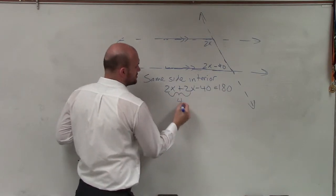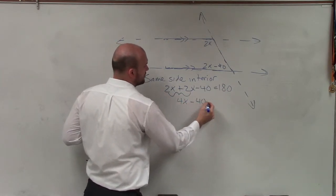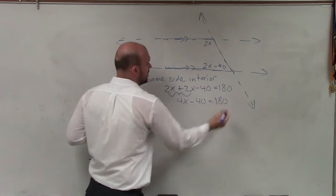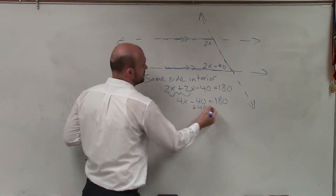Now I can combine my like terms. So I get 4x minus 40 equals 180. Add 40 to both sides.